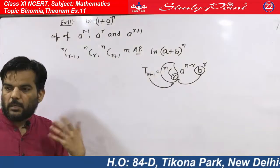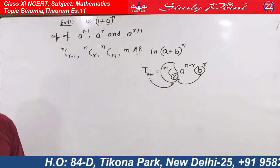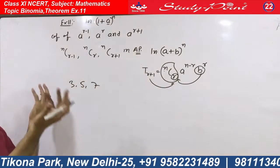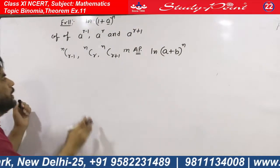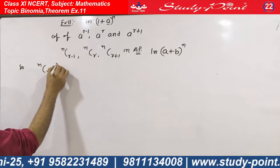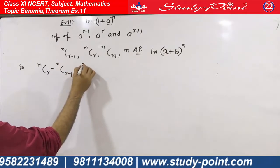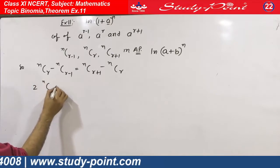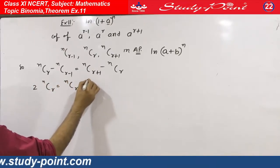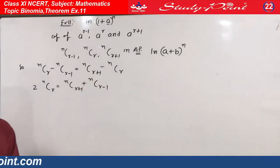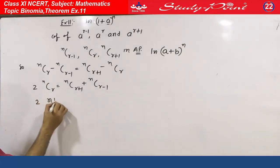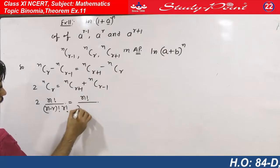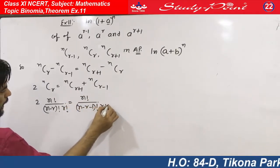The condition for AP is that the difference between consecutive terms is the same. For example, in 3, 5, 7: 5 minus 3 equals 7 minus 5. Apply the AP rule and solve. So if these are in AP, we get: nCr minus nC(r-1) equals nC(r+1) minus nCr, which gives 2·nCr equals nC(r+1) plus nC(r-1). Now apply the formula of nCr: n factorial upon (n minus r) factorial times r factorial.